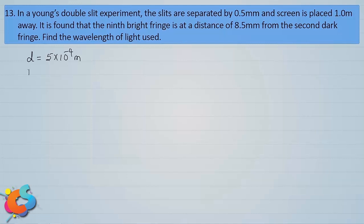The screen is placed at a distance of 1 meter. The given distance X is the gap between the 9th bright fringe and the 2nd dark fringe, which is 8.5 millimeter. We need to find X first and then use it to find the wavelength of the light used.